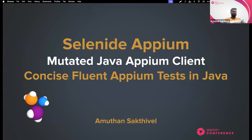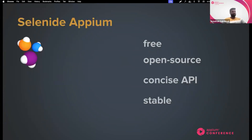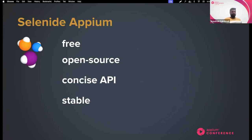Selenite APM is the library I'm going to speak about today. I call it the Mutated Java APM Client because we've built a lot of wrappers around APM, so it helps us write concise, fluid APM tests and will save thousands of hours while writing them. When you ask why you should try Selenite APM when you already have APM - importantly, it is free, it is open source, built on top of APM, and it has a concise and precise API.